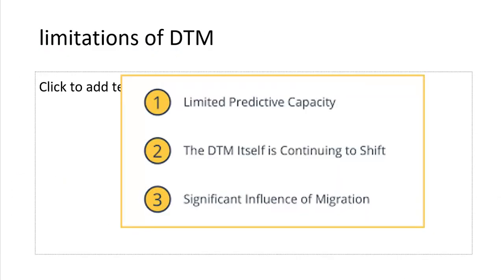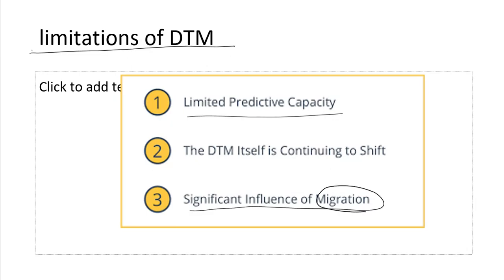The limitations of this model include limited predictive capacity. The DTM model itself is continuously shifting, and with time we might have a stage six. Additionally, there is no influence of migration accounted for, so you cannot use it to describe the total population growth of a particular region or country.